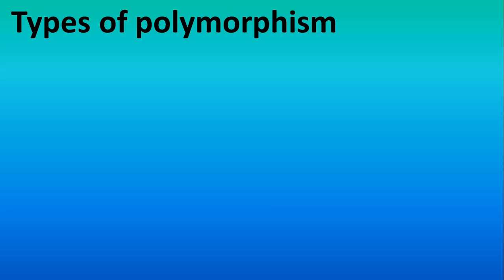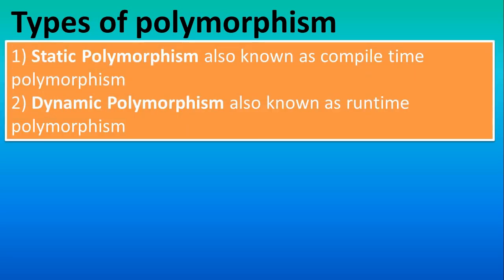Hello watcher and subscriber, today we discuss the types of polymorphism in Java. There are basically two types: static and dynamic. Static is known as compile time and dynamic is known as runtime polymorphism.